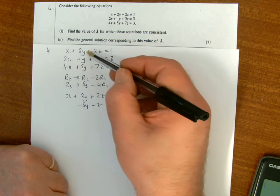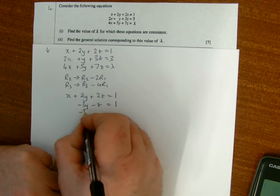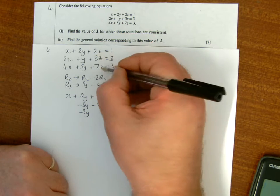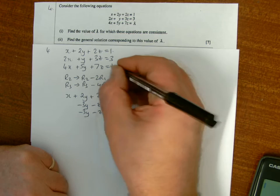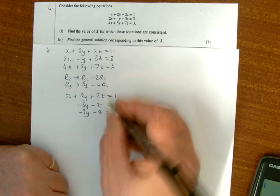Row 3, that's 0, 5y take away 8y is minus 3y, 7z minus 8z is minus z, and lambda minus 4.